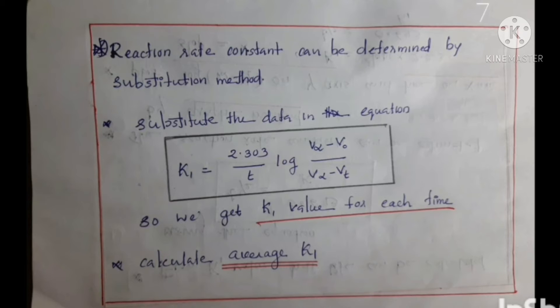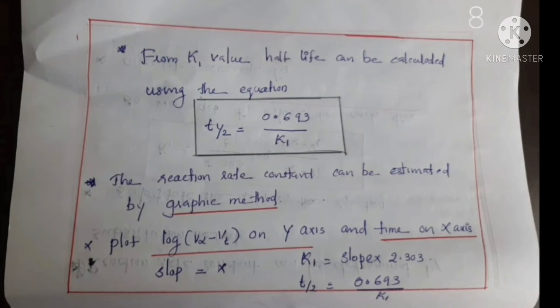From the experimental data, you can calculate the reaction rate constant and half life. By the substitution method, substitute data into the equation: K1 equal to 2.303 divided by T, log of V infinity minus V0 divided by V infinity minus Vt. We know the values of V0, Vt, and V infinity, so we substitute them to get K1 for each time interval. Then calculate the average K1 value, and use it to find half life: T½ equal to 0.693 divided by K1.